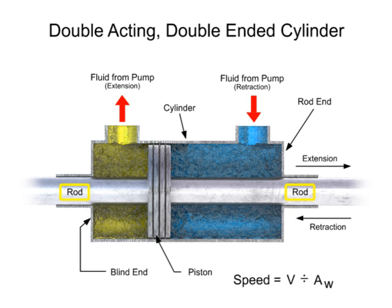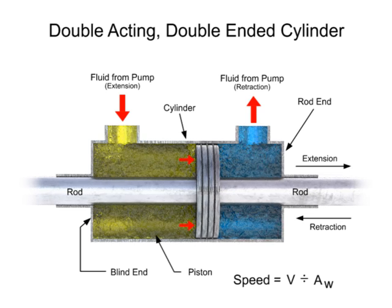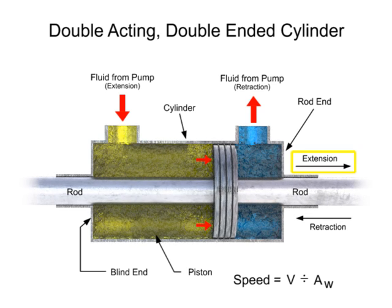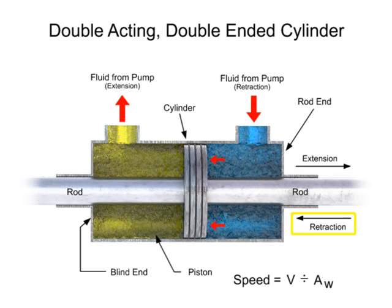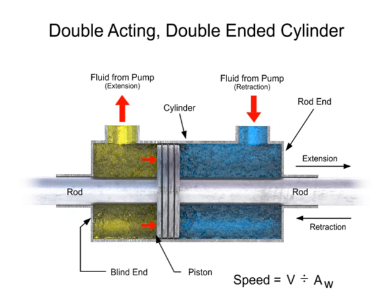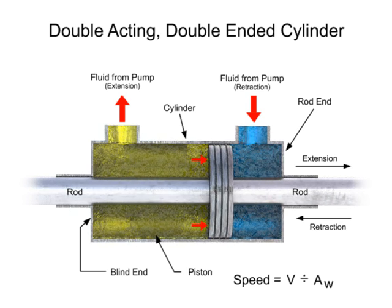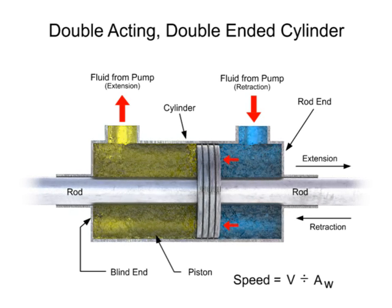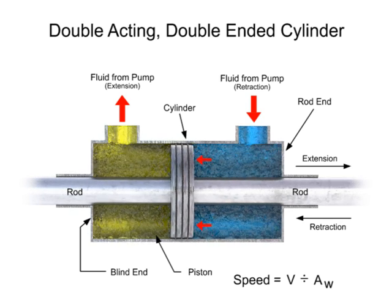Double-ended cylinders have two rods, both attached to the piston, each coming through an end cap. They work similarly to single-ended cylinders, but are used when a constant speed is required for both the extension and retraction strokes. Since the flow rate and piston areas are the same, the speed for extension and retraction is also the same.